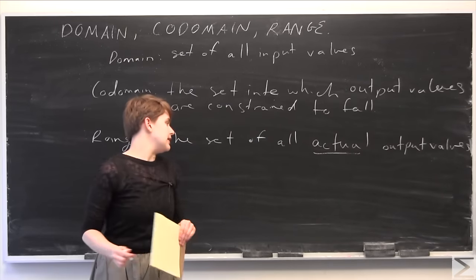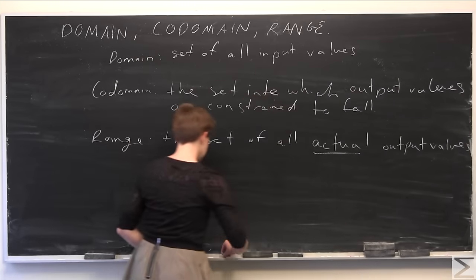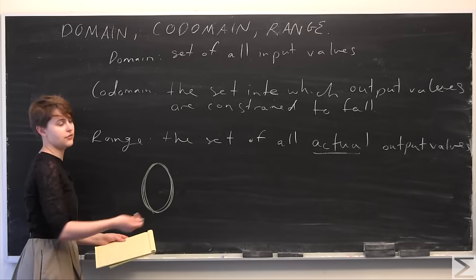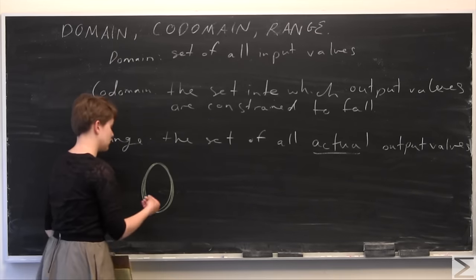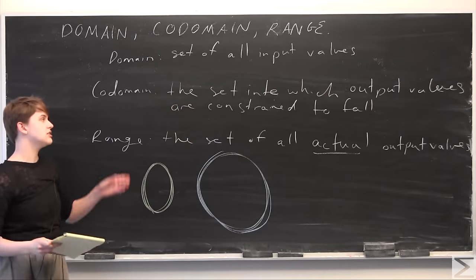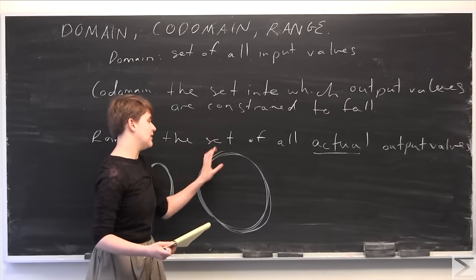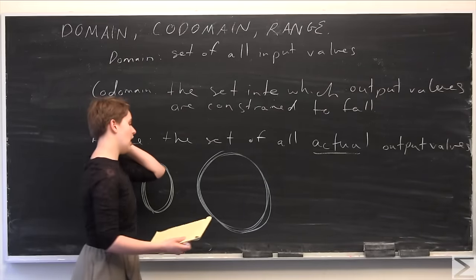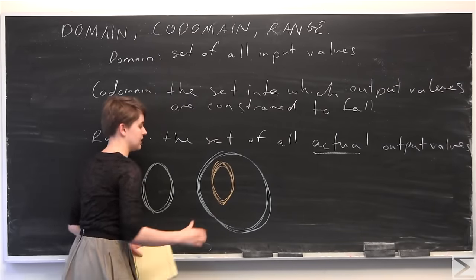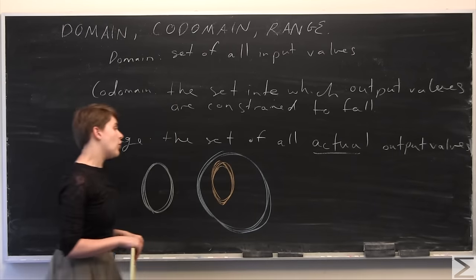To help make this clearer, I'll draw a little picture. So we start with the domain over here — some x values if we're taking f of x. And then some codomain, which is kind of our target set — the set into which all output values are going to be constrained. We know that nothing from the domain is going to produce output going outside of this codomain. The range then could be something like this, a region within the codomain. So the range is a subset, completely contained inside of the codomain.